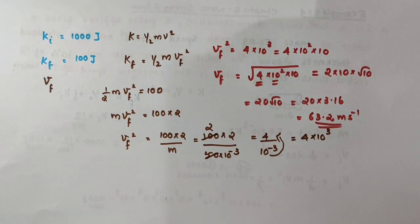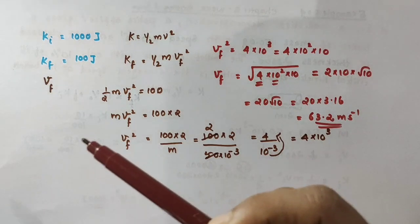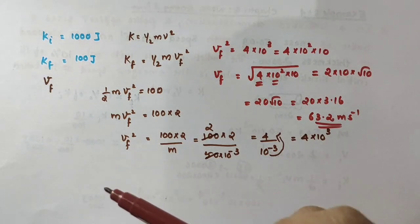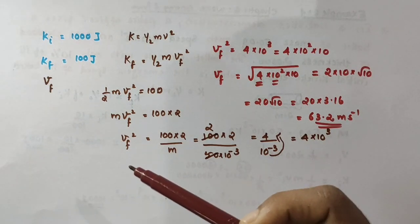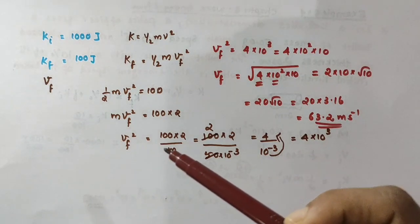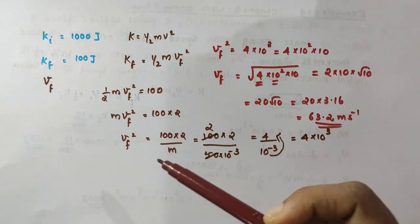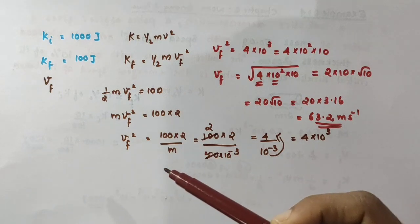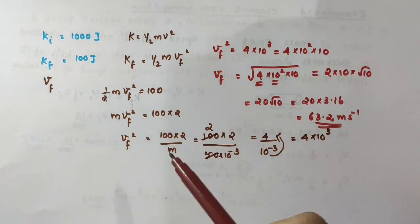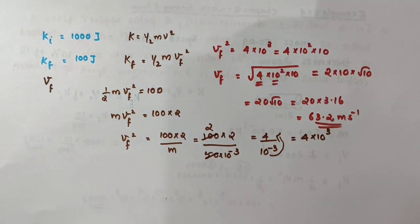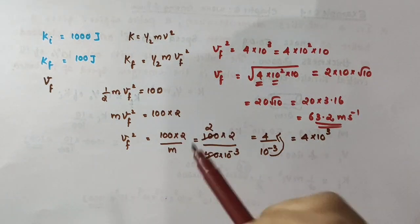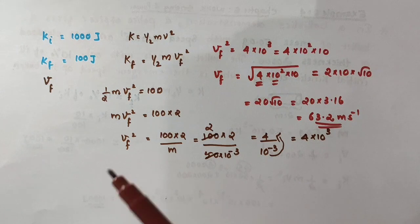So in this video we have discussed example 6.4 from class 11 physics chapter 6 'Work, Energy and Power'. This example is based on the concept of kinetic energy. I hope you understood this. Thank you.